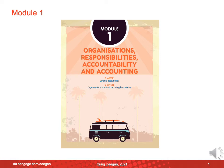The book is broken into four modules. Module one looks at organisational responsibilities, organisational accountabilities and accounting. Chapter one will really explore what accounting is and show how rich accounting really is, whereas chapter two will look at organisations and their reporting boundaries.